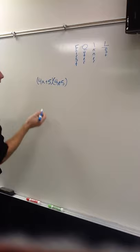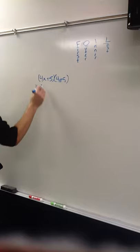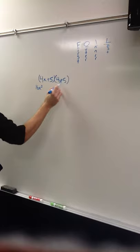So, you do another 4x plus 5. So, right here, you see you get 16x squared for the first ones, 4x and 4x. Then, for outer, you get 4x and 5, so that'd be plus 20x.